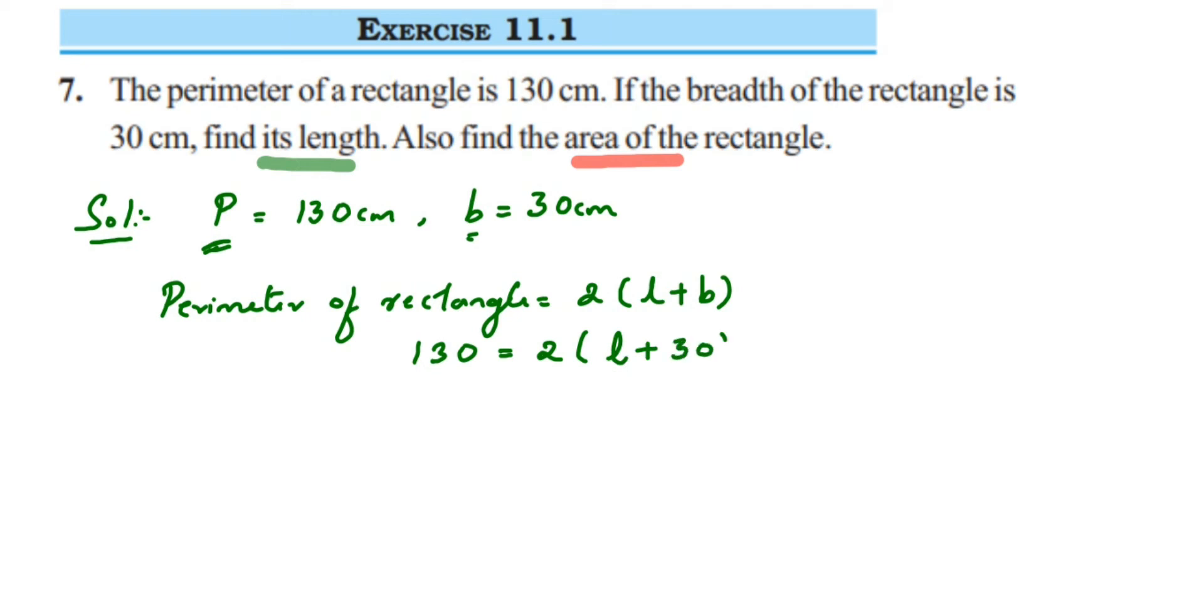To solve this for L, we need to transpose the numbers outside the bracket first. We have to transpose the 2 because it's outside the bracket. Since 2 is in multiplication, when we transpose it to the other side it becomes division. So 130 divided by 2 equals L + 30.